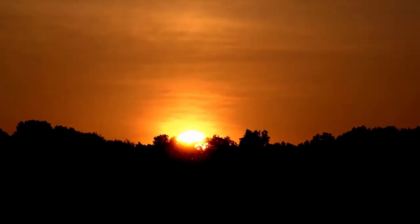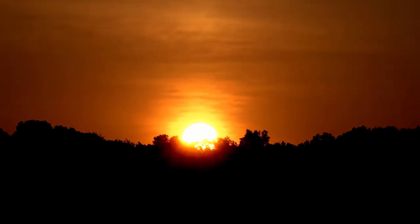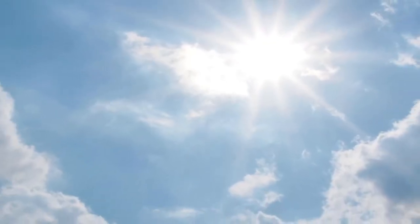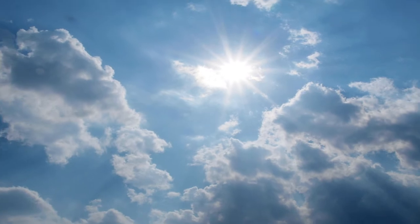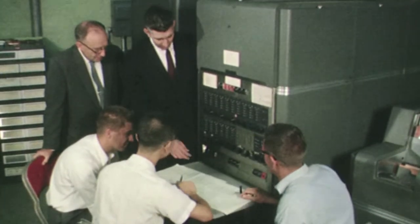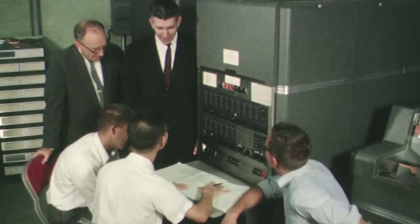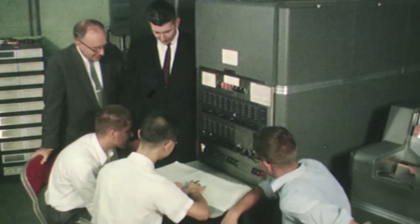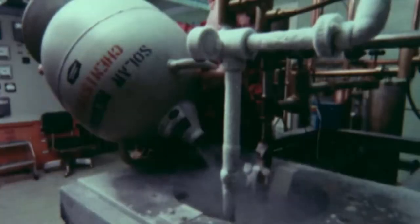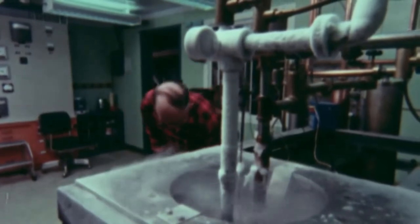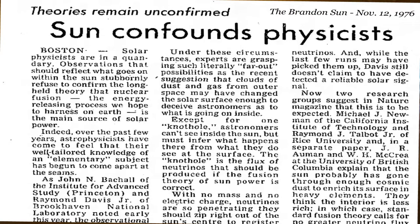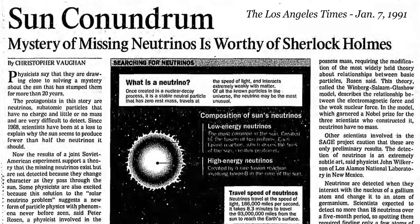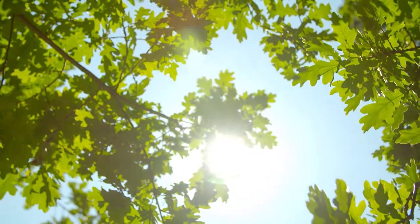For more than 25 years, a problem plagued theoretical and astrophysicists. Based on models of what occurs in the core of the Sun, physicists determined it should produce a substantial number of electron neutrinos. Using data about its energy production, they calculated how many neutrinos the Sun should produce and what neutrino flux should reach the Earth. Subsequently, several experiments were performed to measure the flux and verify the calculations. However, the early experiments found that only a fraction of the predicted flux appeared to reach Earth. This discrepancy became known as the solar neutrino problem.